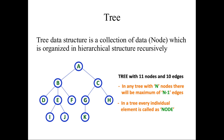This tree has 11 nodes with 10 edges. Edges are connections or links between nodes. If there are n nodes, you will get n minus 1 edges. Here there are 11 nodes so we have 10 edges.